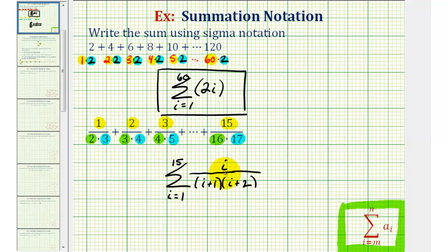This would be the sigma or summation notation for the given sum. Notice when i is equal to one, we'd have one over two times three, which is our first fraction. When i is equal to two, we'd have two over three times four, which would be our second fraction and so on.